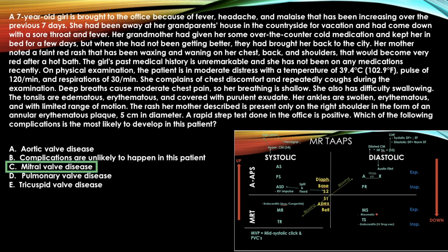The next question is mitral valve disease. This tests your ability to detect signs and symptoms of rheumatic heart disease and knowledge of the Jones criteria. The child meets two major Jones criteria, leading you to rheumatic heart disease, which most commonly affects the mitral valve.